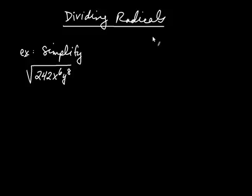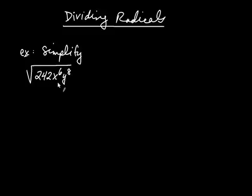Here we're going to talk more about dividing radicals. One big issue with dividing radicals is looking for perfect squares, perfect cubes, or perfect fourths. Even though this first problem doesn't involve dividing radicals, we're going to use it to illustrate a technique. The biggest issue is dealing with a large number like 242. The exponential expressions are easy to handle because all you need is divisibility of the power by the index. So the question is what to do with the 242 — we're going to create its prime factorization.